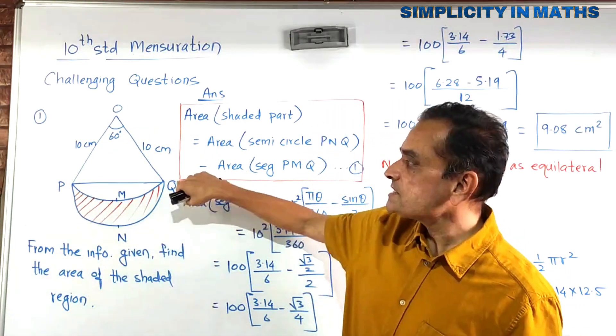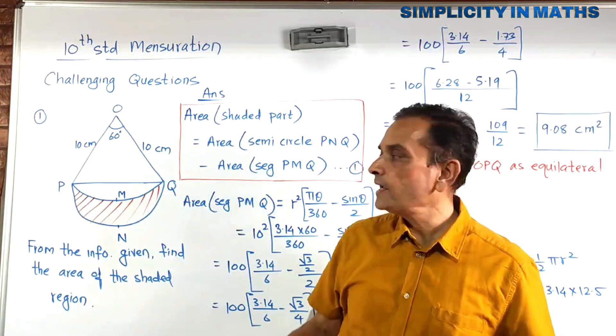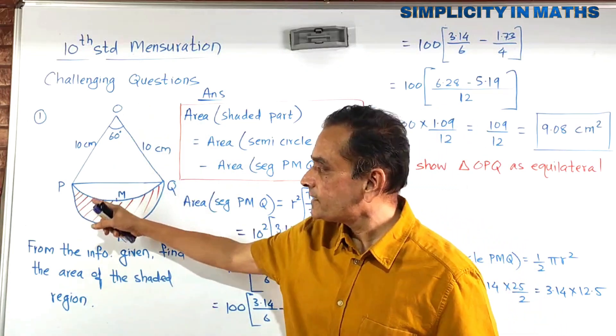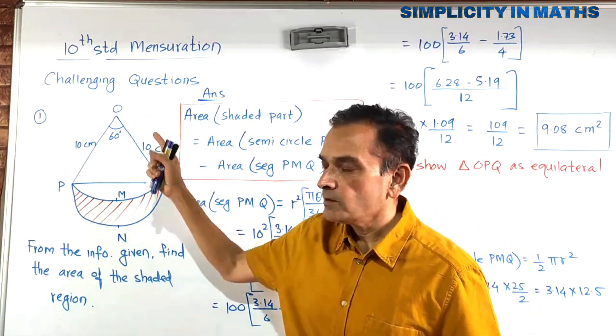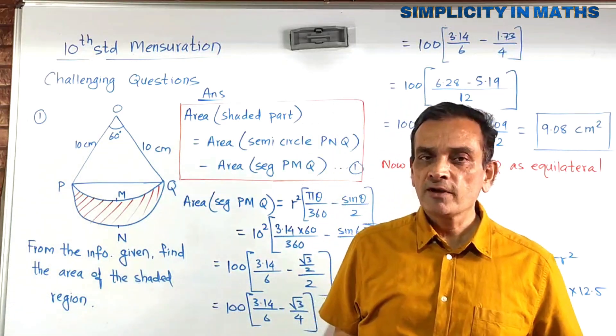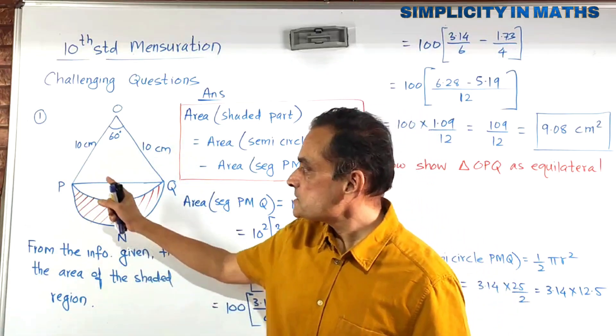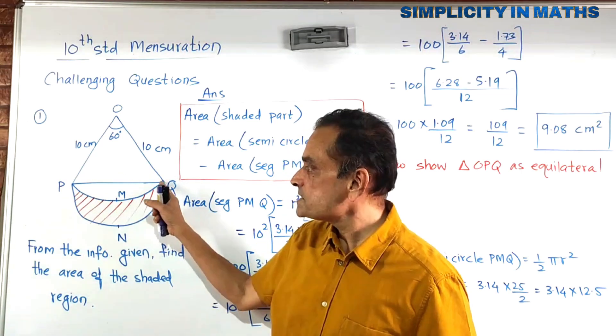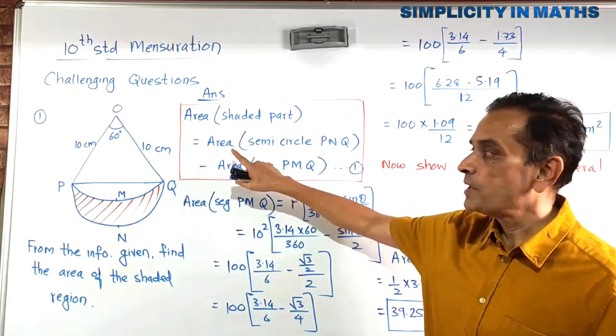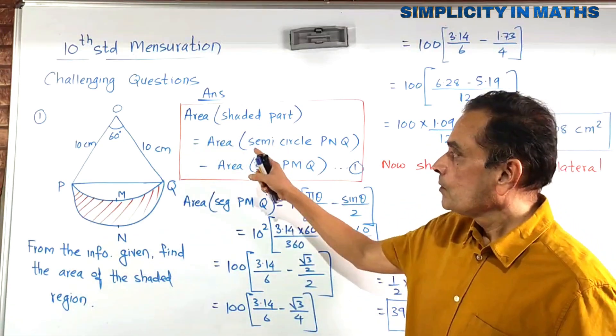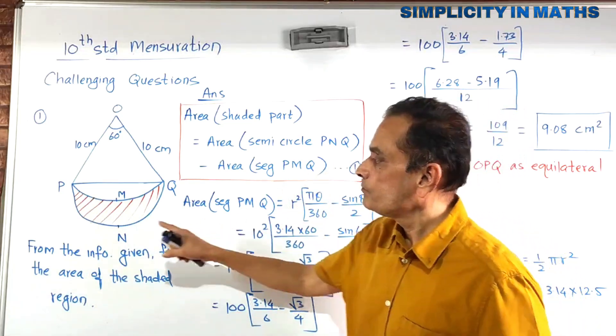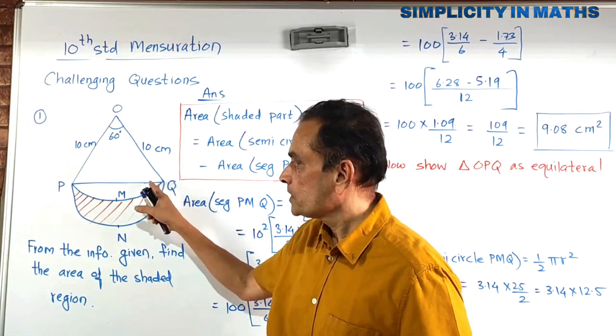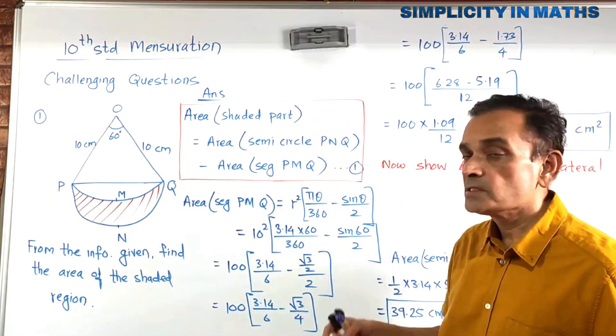Although O, P and Q is a sector, we do not require to find area of the sector. Because area of the sector minus area of the small sector again will give us some difficulty in solving. Instead of that, just look at the semicircle. So area of the semicircle minus area of the segment will be our answer, which I have written as the first step.